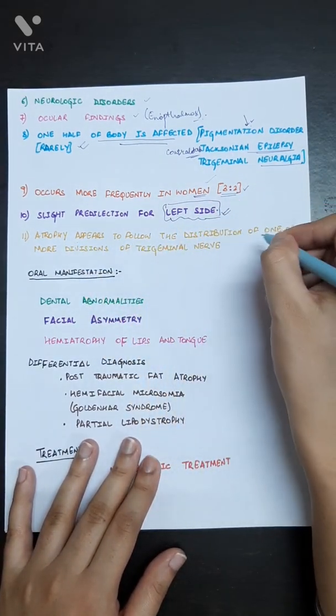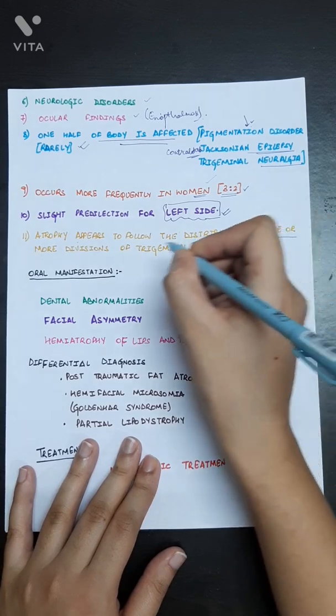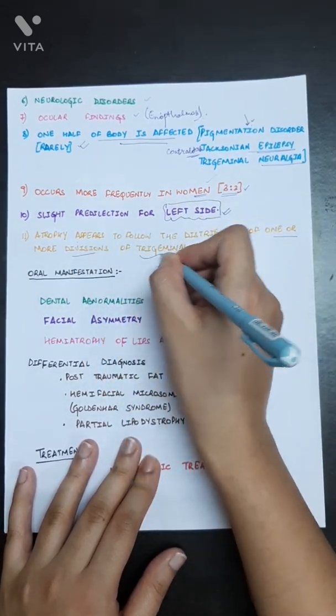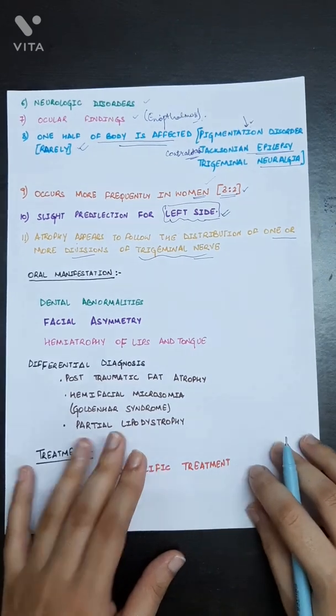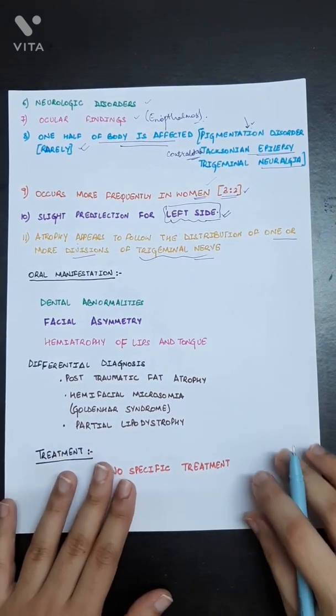Atrophy appears to follow distribution of one or more divisions of trigeminal nerve. Now the oral manifestations.